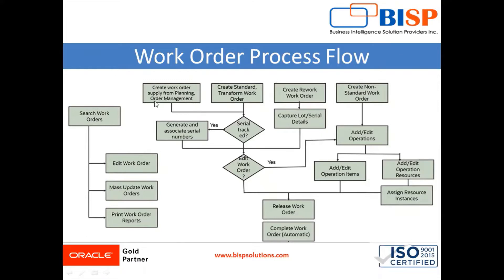In the manufacturing application, you can create standard work orders, standard transform work orders, rework work orders, and non-standard work orders. When you create standard work orders, they are for a particular product or item and will have a particular work definition used for execution. Transformation work orders transform one part number into another part number. Rework work orders are used for repairing an item or fixing something that did not pass during the build process.